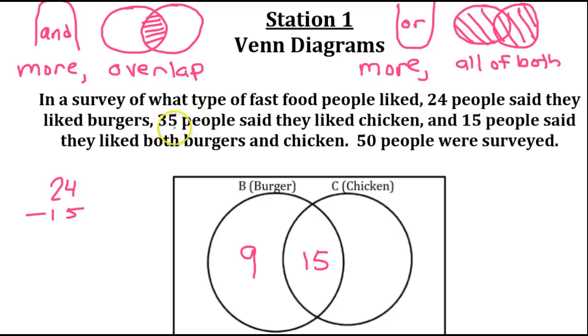Similarly, 35 people said they like chicken. But, you have to subtract the 15 people that we already have written down. These 15 people like chicken. So, we have to subtract those people from the total to figure out the number that goes out here. So, that's going to be 20. Notice that the 15 and the 20 together make the 35 people who like chicken.